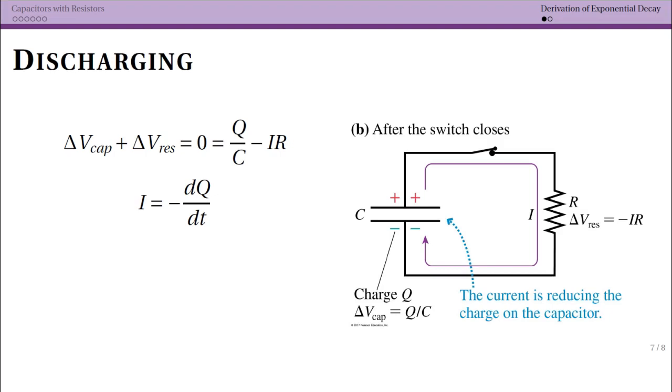In this video I'm going to do the derivation that gets us to the exponential functional form for how the charge on a capacitor varies in time. I think this is a helpful derivation to understand and that it helps you understand what's really happening in this scenario.